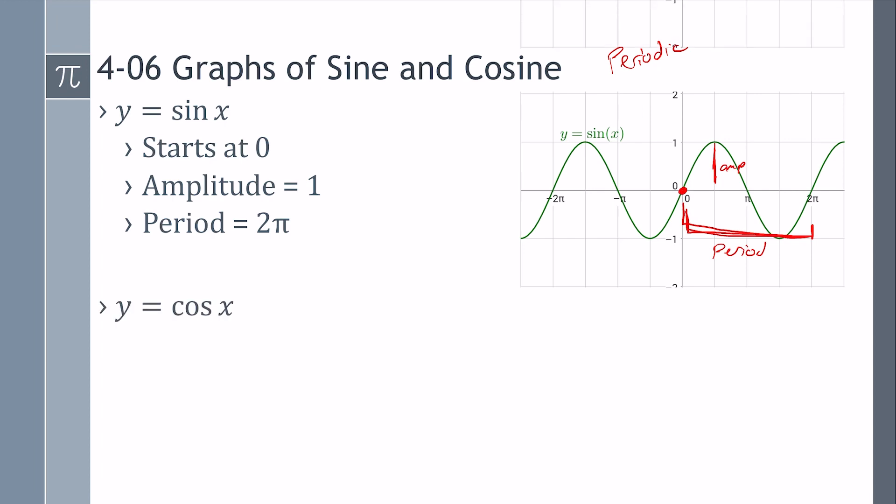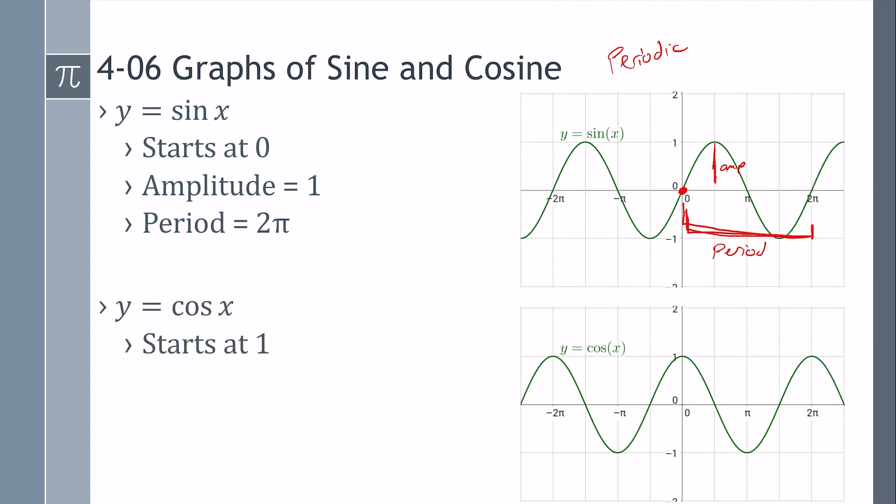Cosine is very similar. Only cosine starts at the top. Cosine at zero is one. But the amplitude is still one, and the period is still two pi.